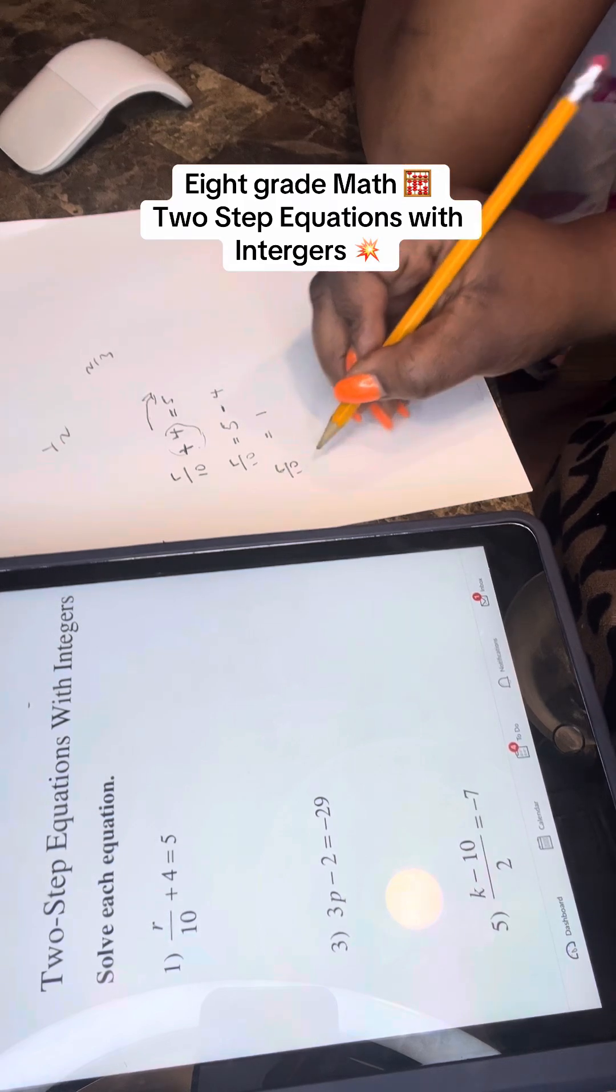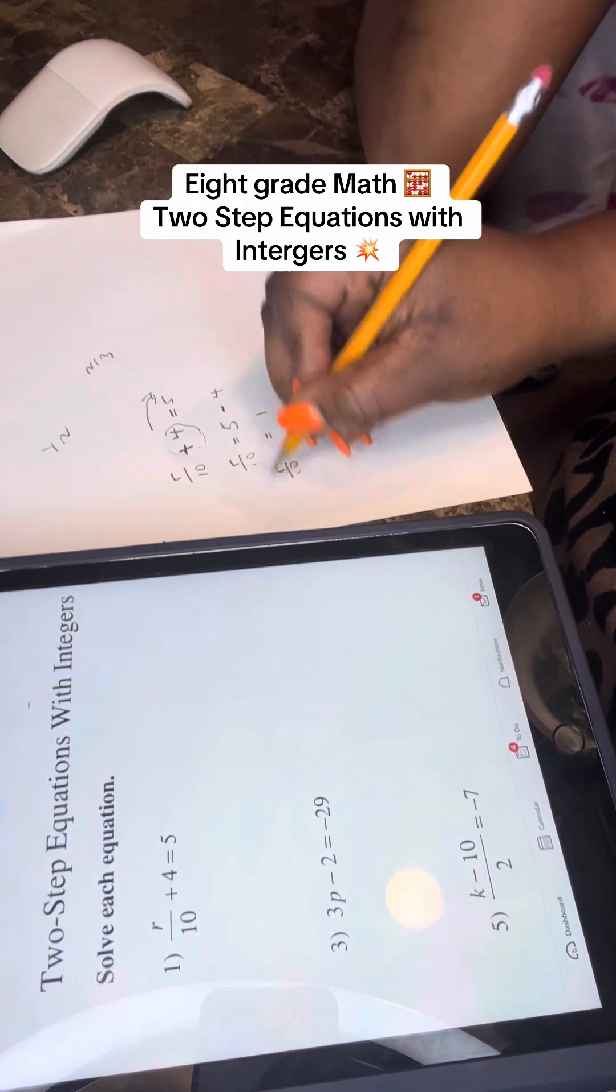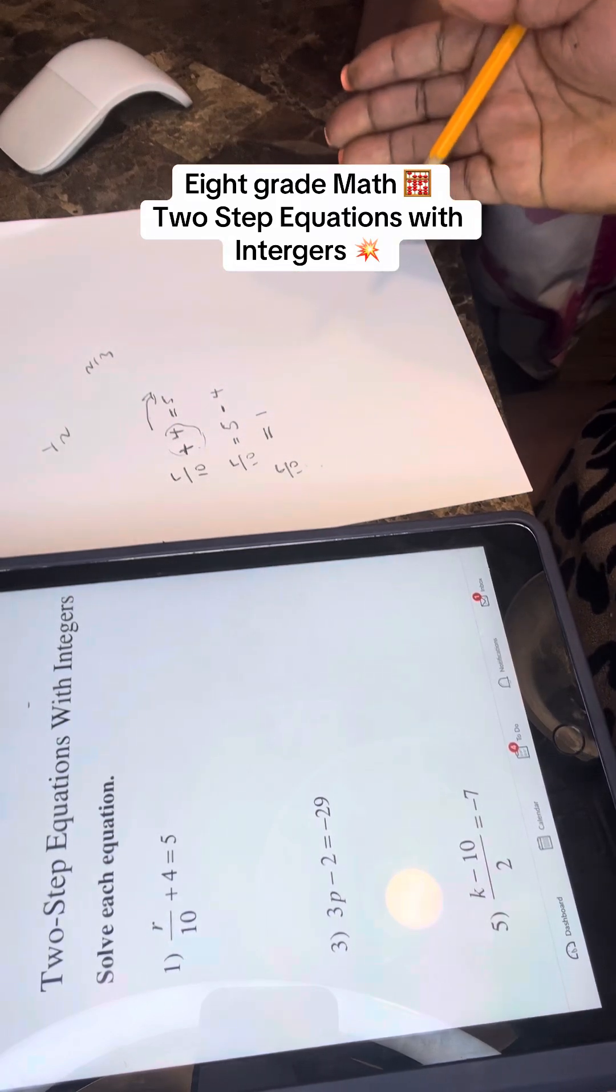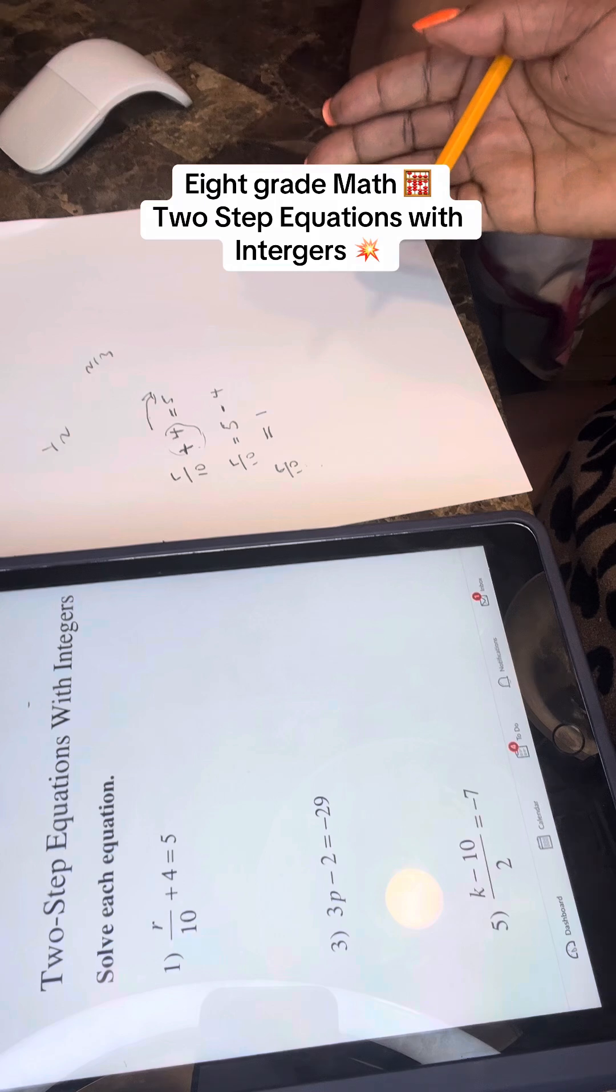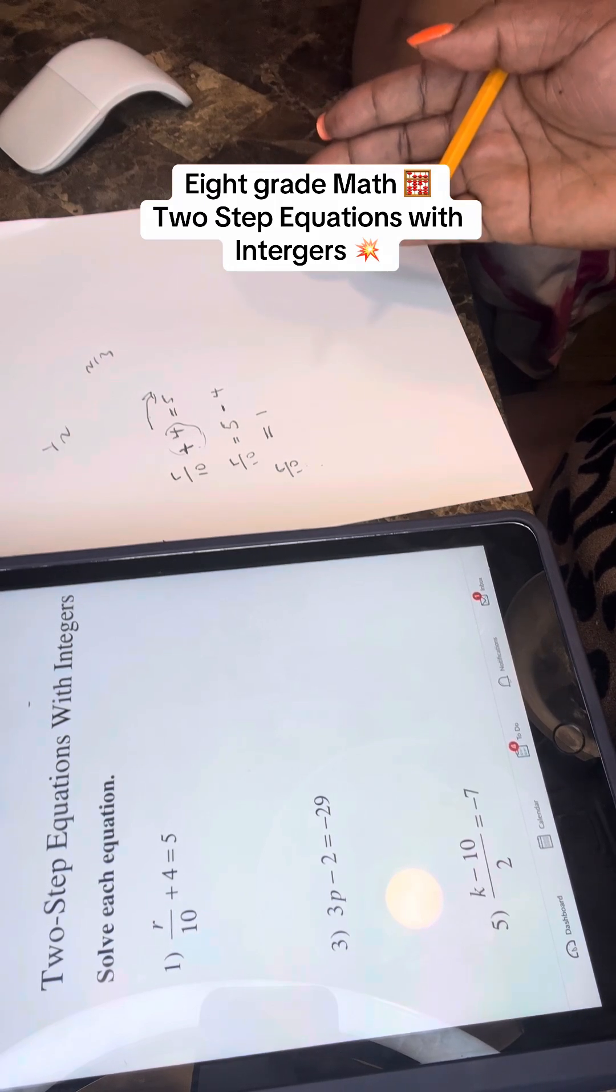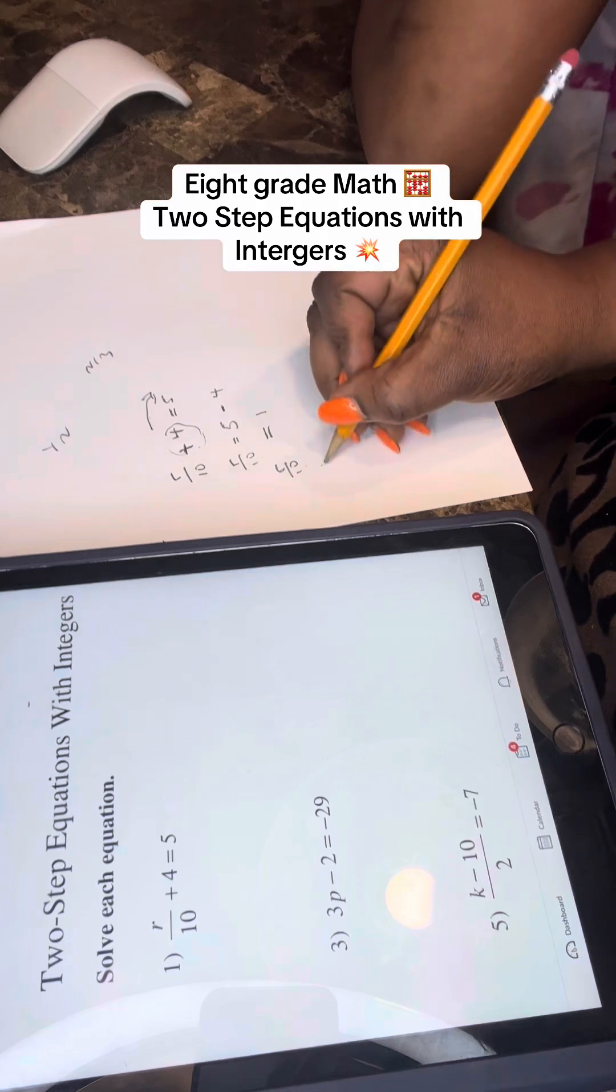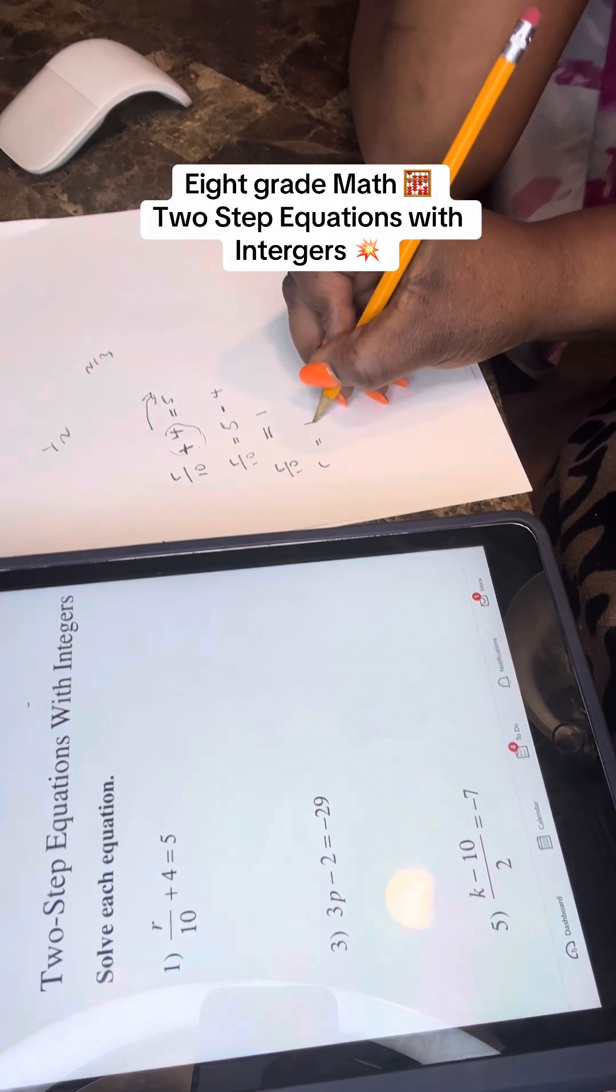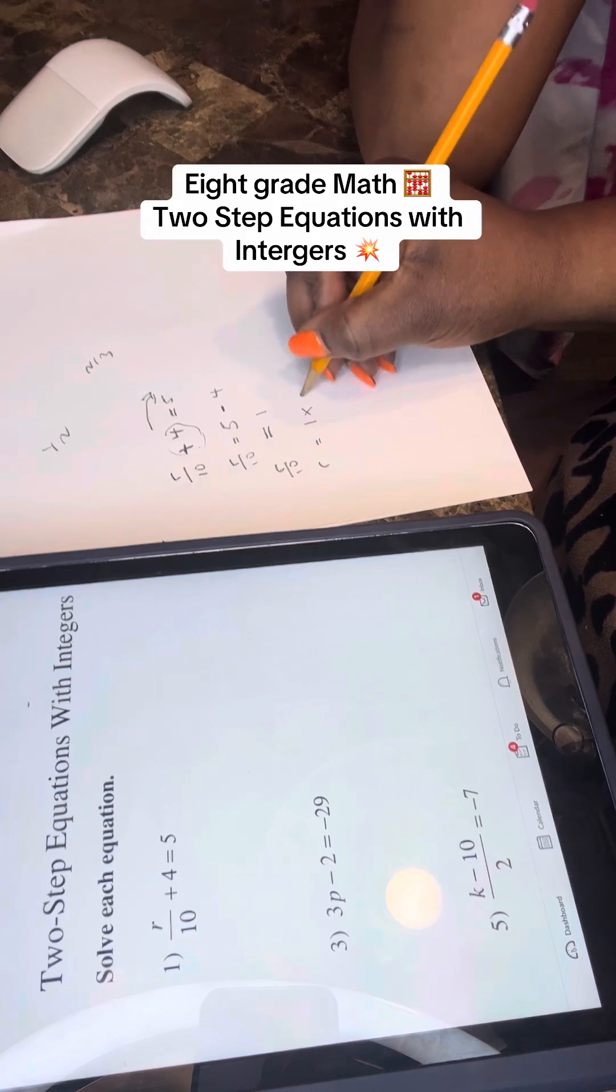So when you move the division to the opposite past the equality sign, it becomes what? What's the opposite of division? Subtraction? No. Oh, I thought you said addition. Sorry. Multiplication. So now we're going to have arrow is equals to one times 10.